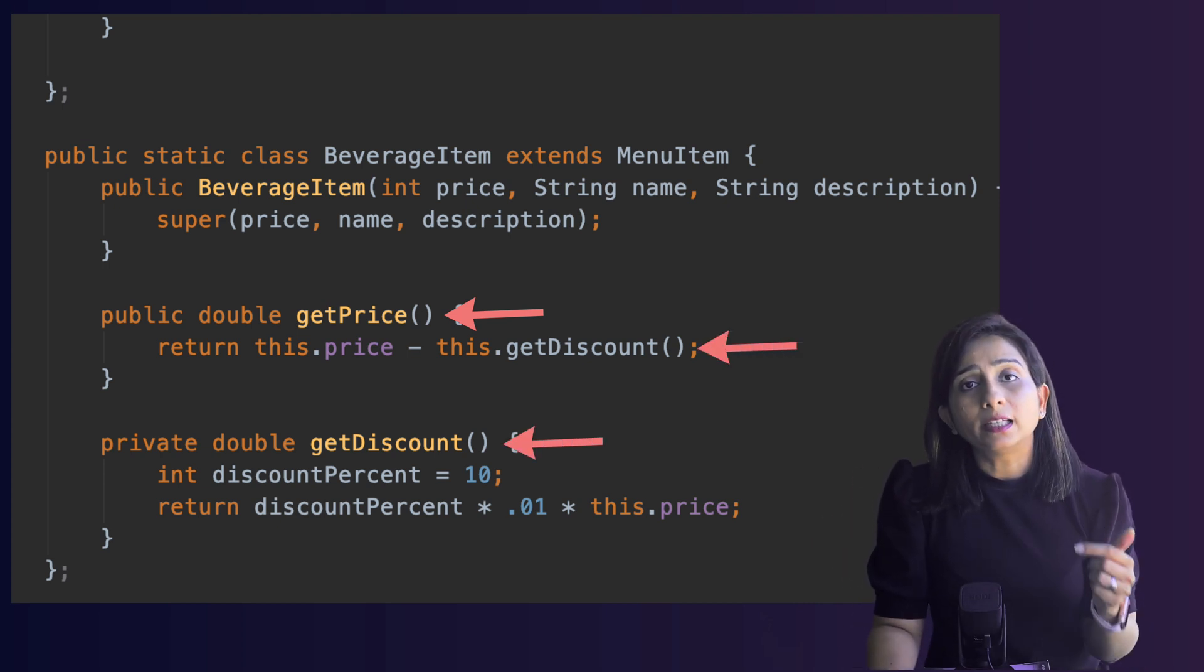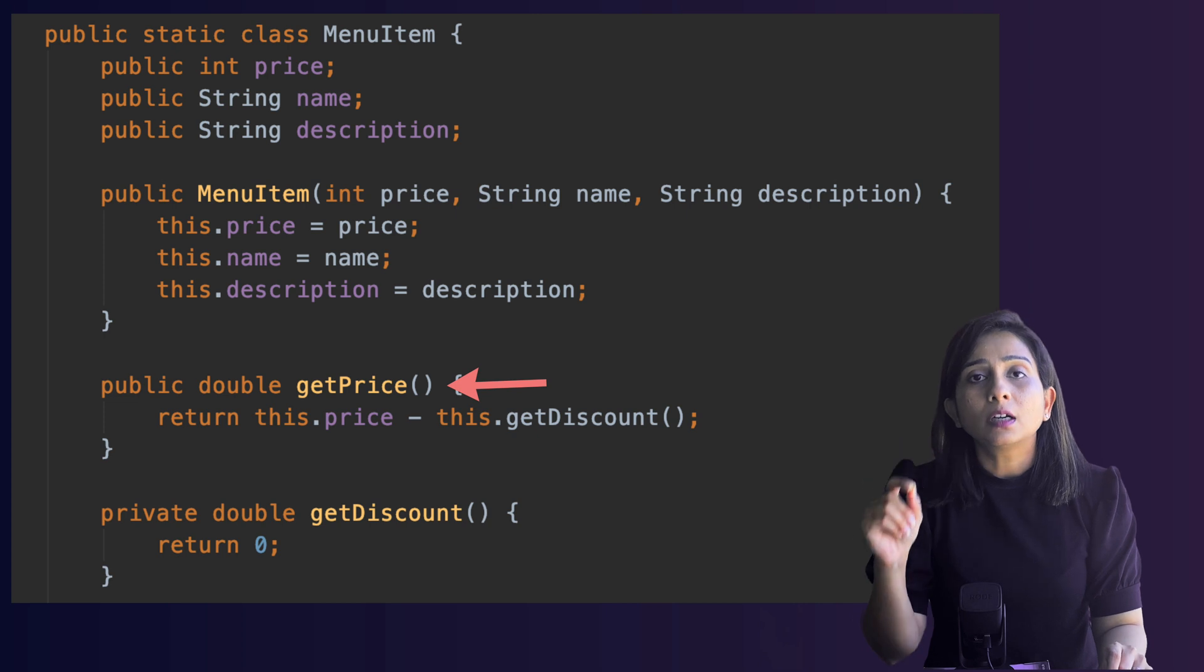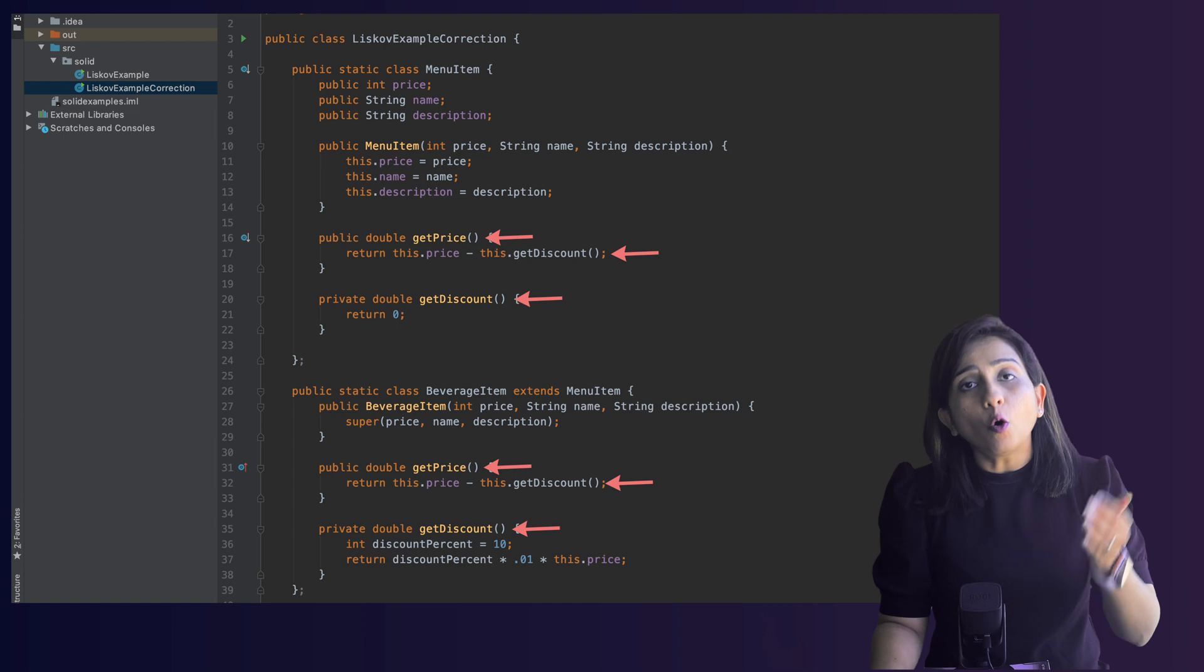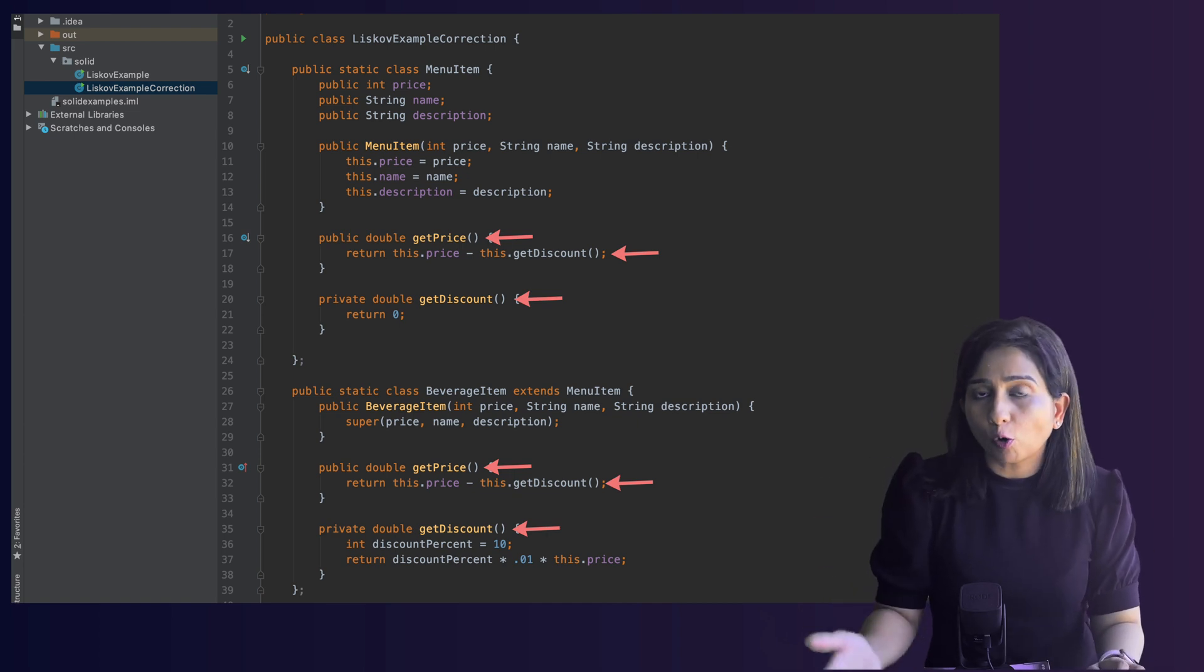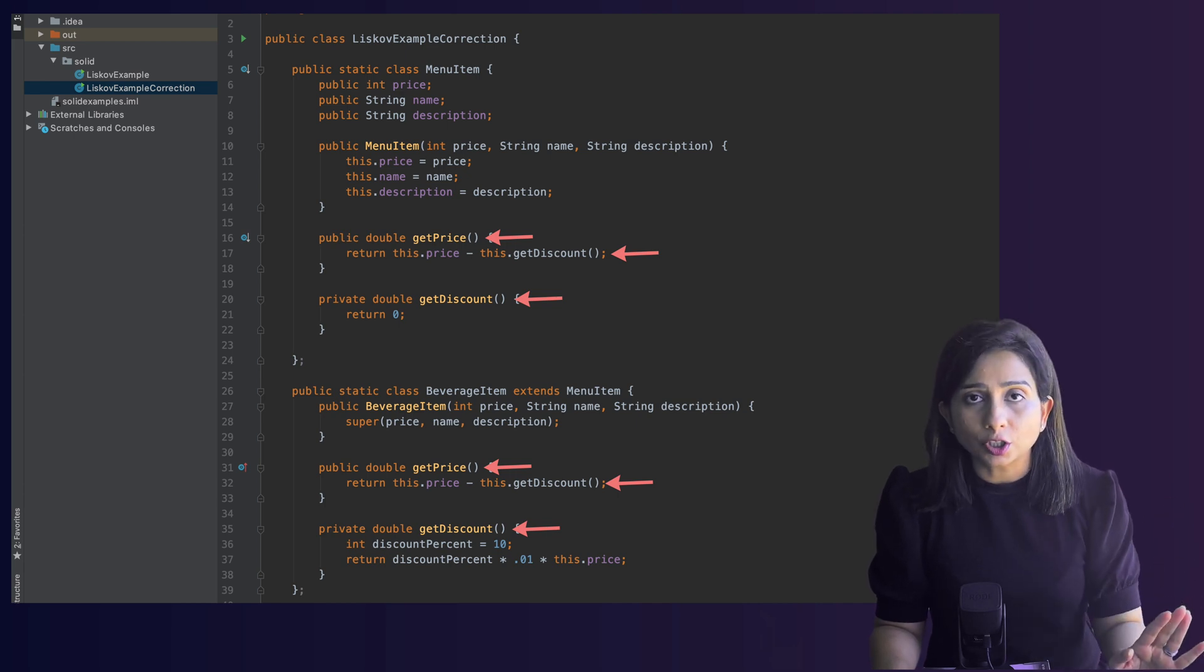Now again the problem with this implementation is tomorrow if there is a discount introduced in MenuItem class then how are we going to handle it. So in order to handle this what we are going to do is in the getPrice function of MenuItem class we will call a private function getDiscount. We will define that private function in MenuItem class and we will override that function getDiscount in BeverageItem class. In BeverageItem class we can return the 10% discount that has to be applied on all the beverage items. In the MenuItem class we will just leave that function as it is and return 0.